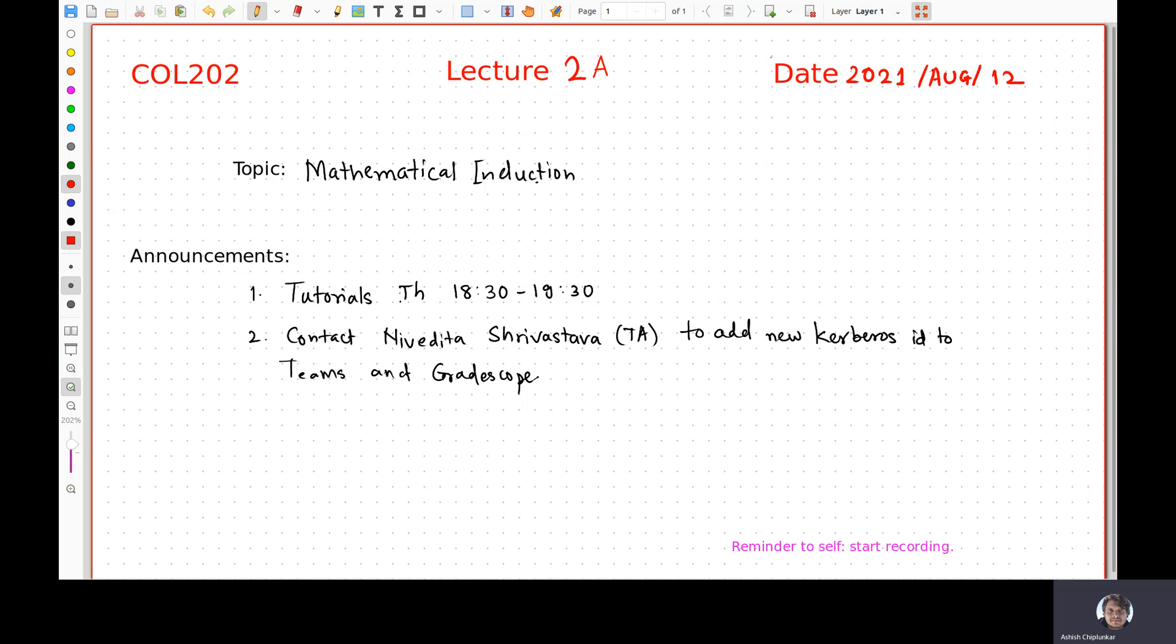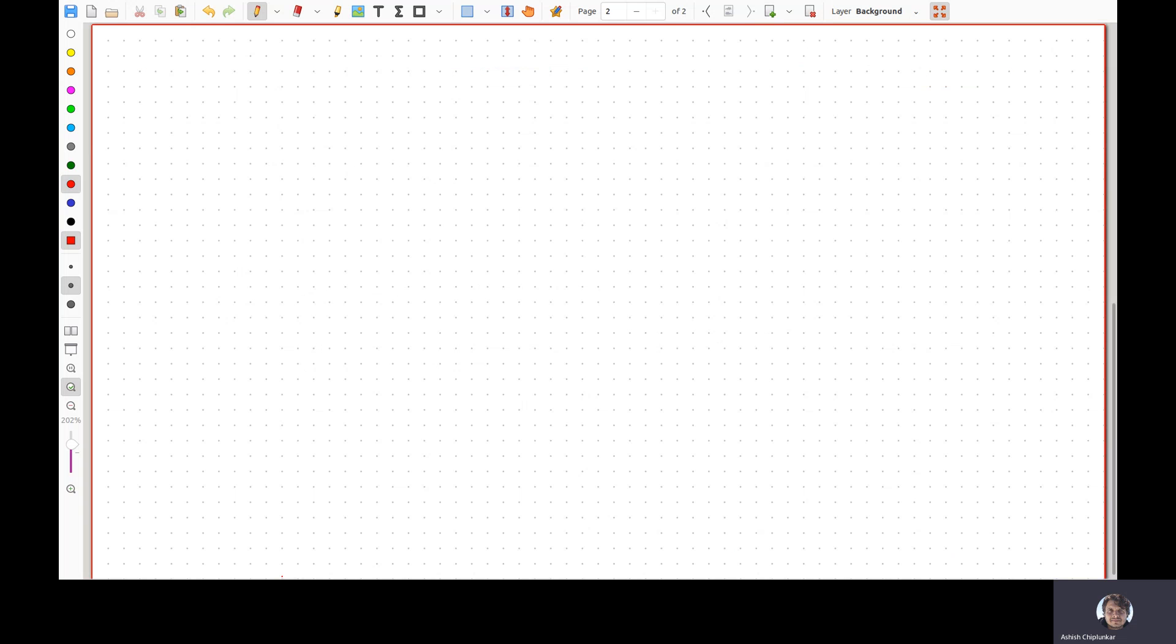Okay. So what did we start with? We continued our discussion about proof techniques that we started in the last class and we looked at the proof of the following claims. The claim states that square root 2 is an irrational number, or in other words, there does not exist a rational number whose square is 2.